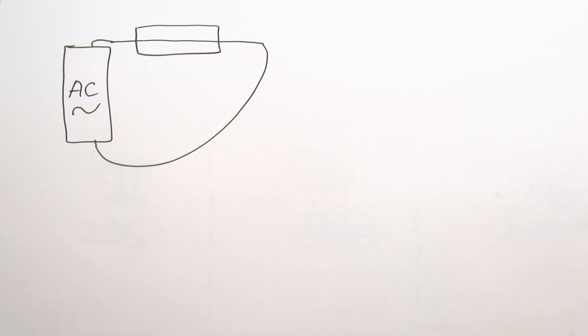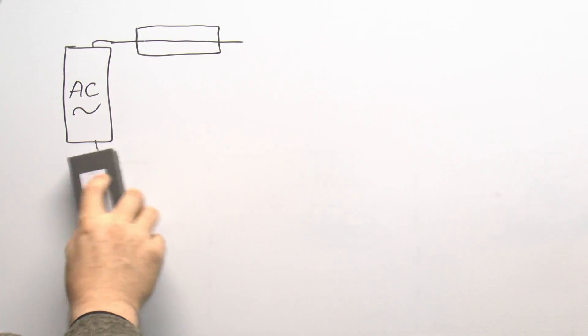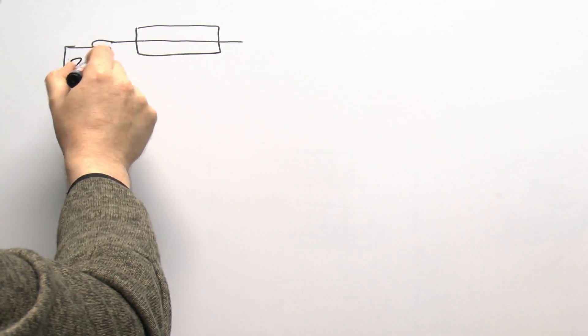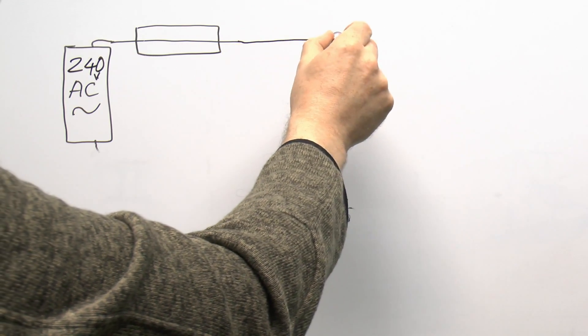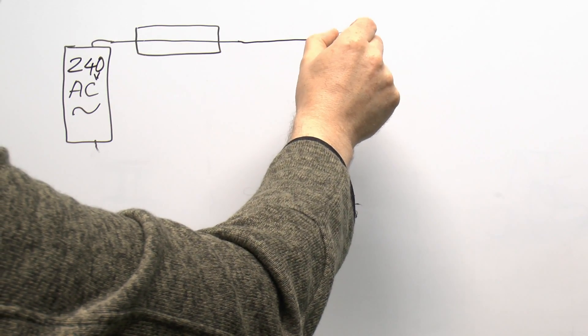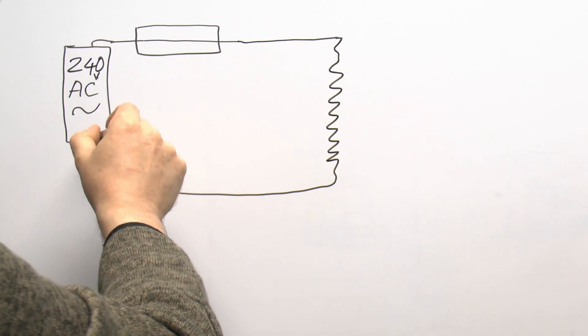Now in a normal circumstance you would have some kind of an appliance there and you would have a much higher voltage, say 240 volts. Then you would have your fuse, some kind of an appliance here, let's say it was some sort of heating element in an electric heater, and then it comes back to the supply.